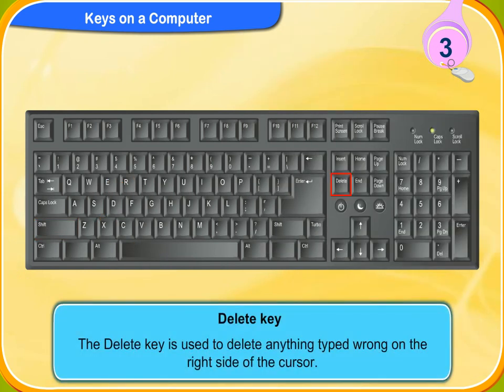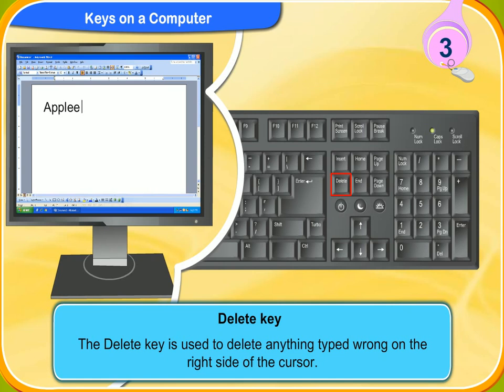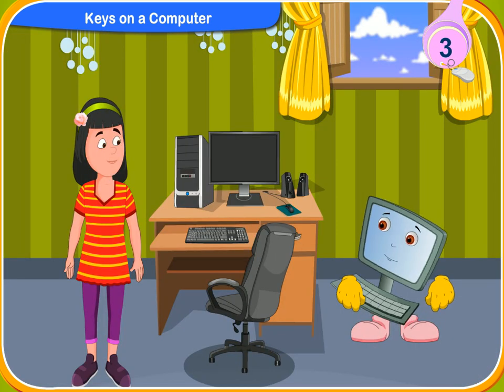The delete key is used to delete anything typed wrong on the right side of the cursor. In case you have typed an extra letter, you can erase it by moving the cursor before that letter using the arrow keys and pressing the delete key once.